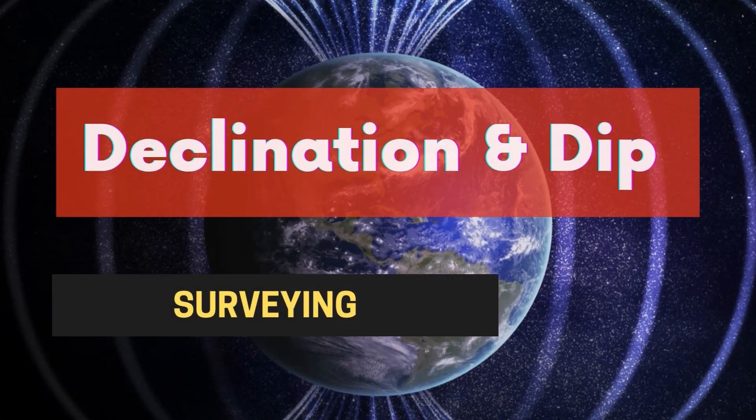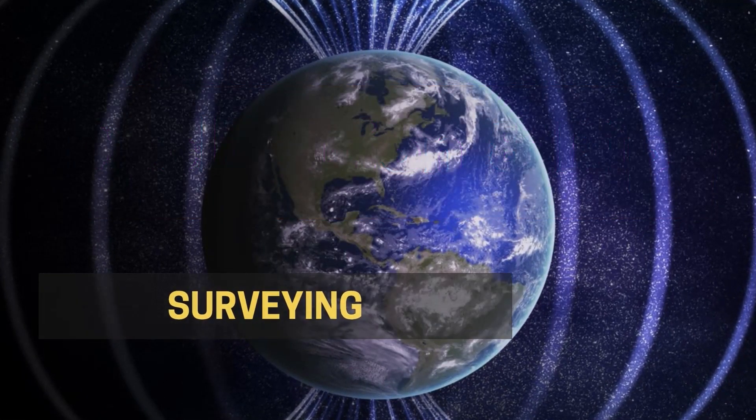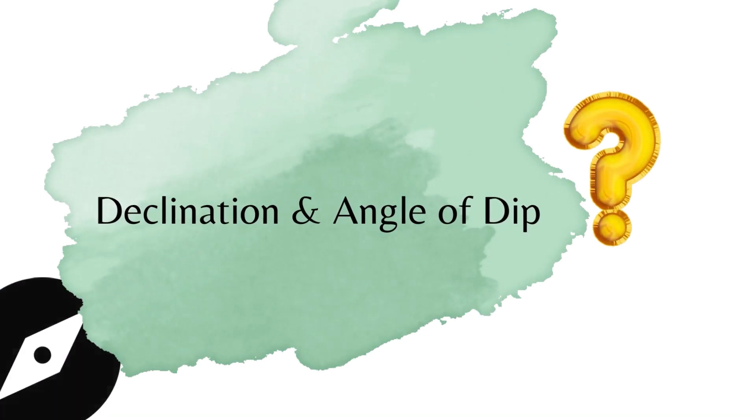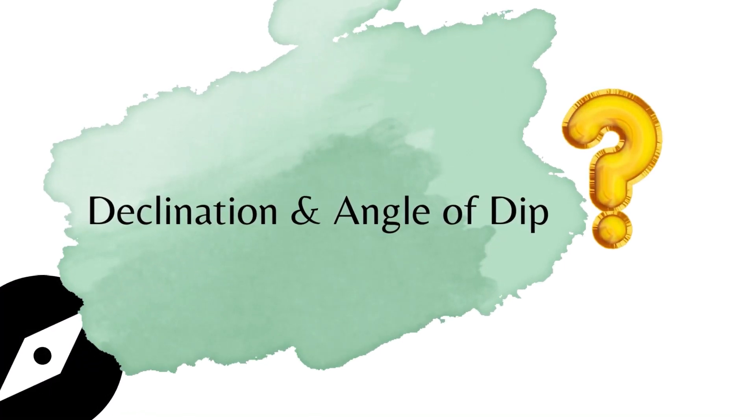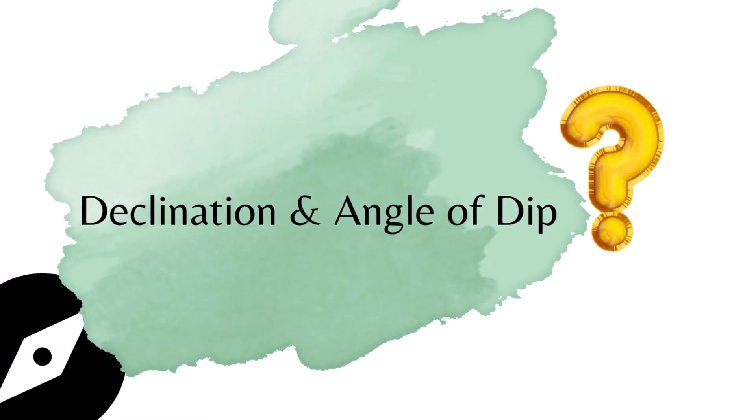Declination and angle of dip are two important terms associated with meridians in survey. Before I explain what is declination and dip, we need to study what is meridian.